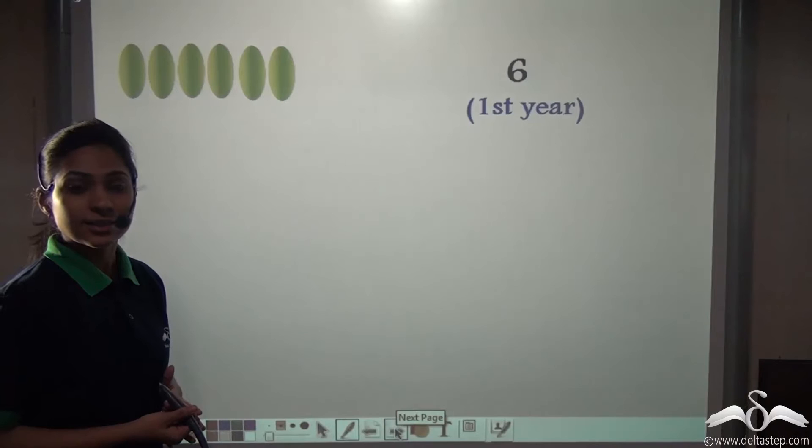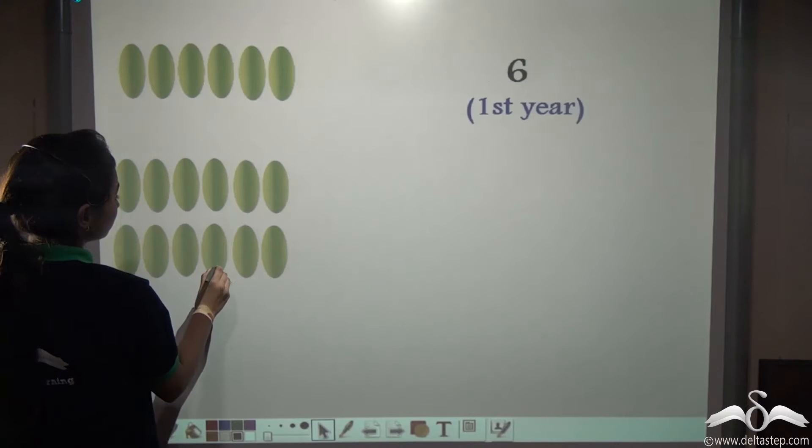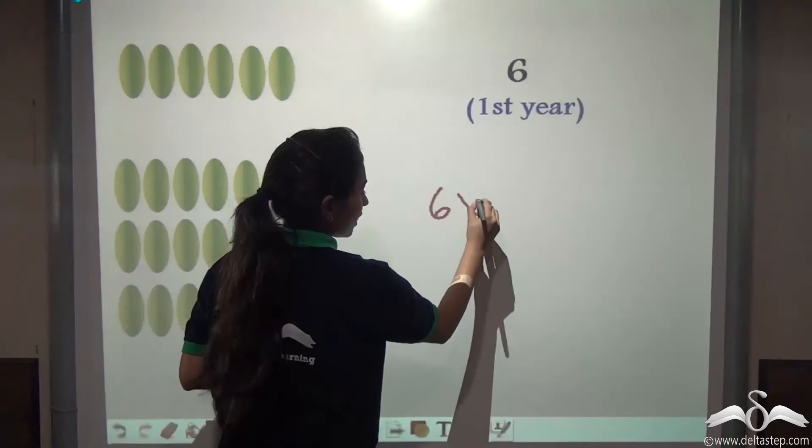So if in the first year she planted 6 seeds, how many seeds did she plant in the second year? Well I said thrice. So thrice the seeds she planted in the first year, that means 6 into 3, that is 18 seeds.